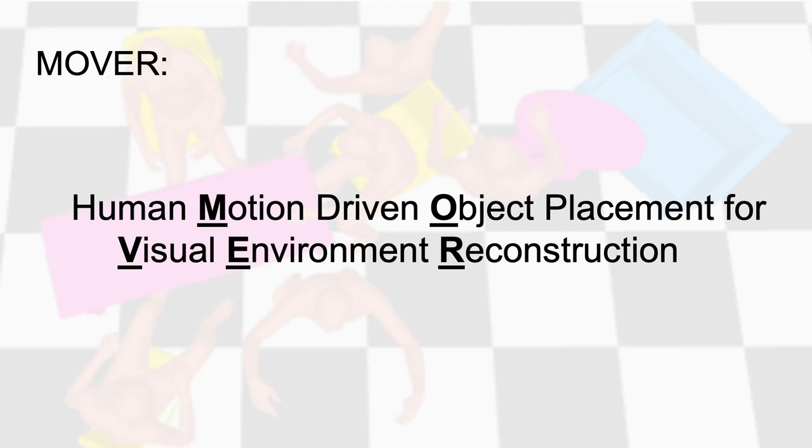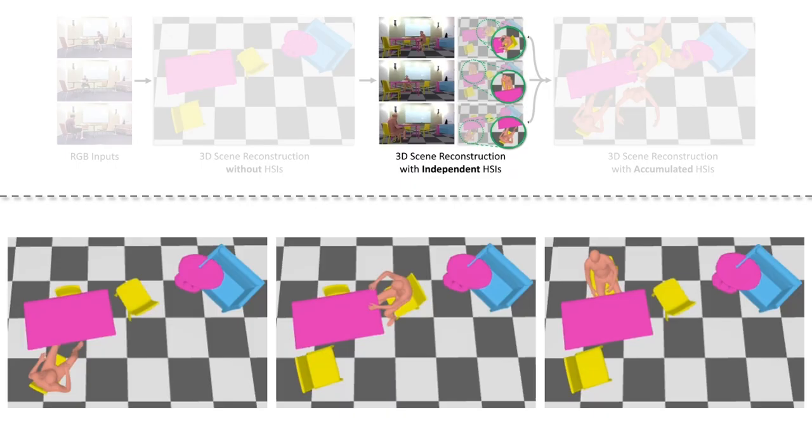We present MOVER, which stands for Human Motion-Driven Object Placement for Visual Environment Reconstruction. We term human-scene interaction as HSI. Each frame contains valuable information about humans, objects, and the proximal relationship between them.